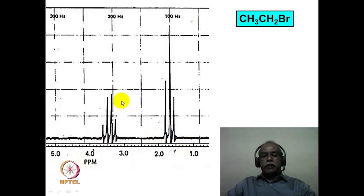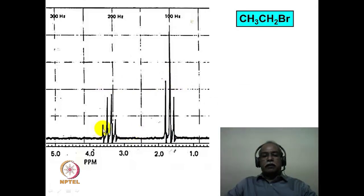If one measures the intensity ratios or the area under the peaks of these two multiplets, it would correspond to 2:3, corresponding to the CH2 and CH3 groups. You also notice the pattern: a quartet with an intensity ratio of 1:3:3:1 and the triplet as 1:2:1. There are some distortions, actually explained as a second order effect, which you will see at a much later stage.